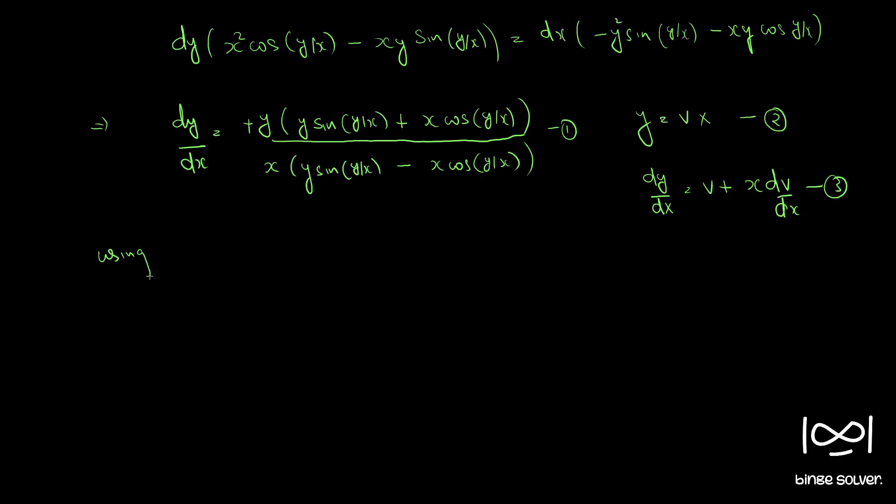Now, using 2 and 3 in 1, we get v plus x dv/dx is equal to, y/x becomes v, v times vx sin(v) plus x cos(v) by x sin(v) minus x cos(v).